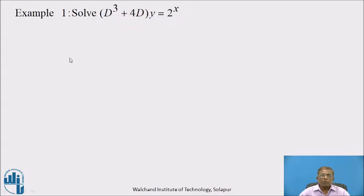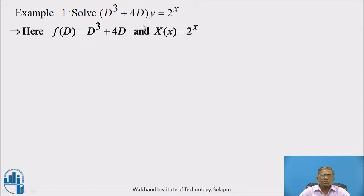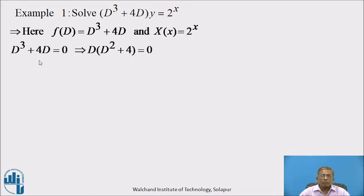Now let us see Example 1. Solve the differential equation (D³ + 4D)·y = 2^x. This differential equation is of the form f(D)·y = X(x). Here, f(D) = D³ + 4D and X(x) = 2^x. First, we find the complementary function by writing the auxiliary equation, equating f(D) = 0: D³ + 4D = 0.